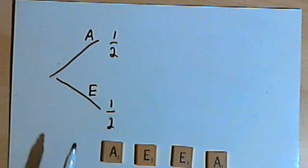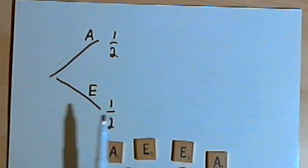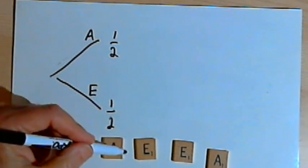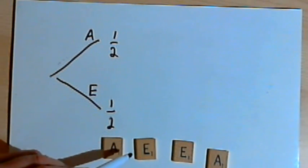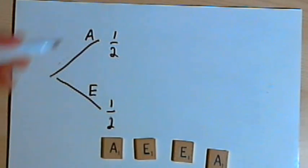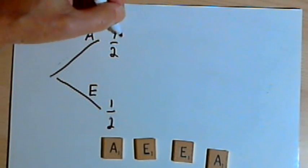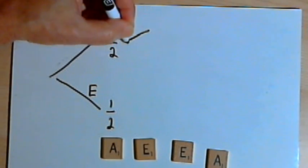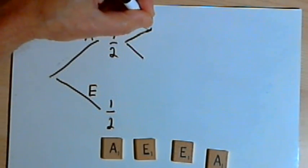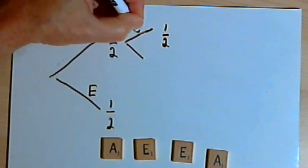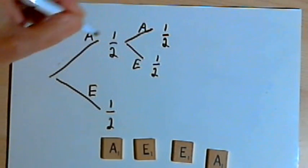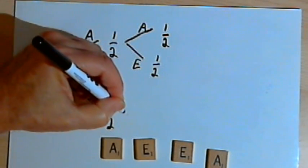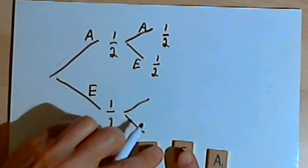If I put the letter back in the bag, then once again there are two A's in the bag and two E's in the bag. So the probabilities the second time around haven't changed at all — they're independent of what I picked the first time. If I want to figure out the probability of getting an A after I got an A the first time, the second time I'm still going to have a one-half probability of getting an A and a one-half probability of getting an E. The same kind of probabilities would happen if I picked an E the first time.